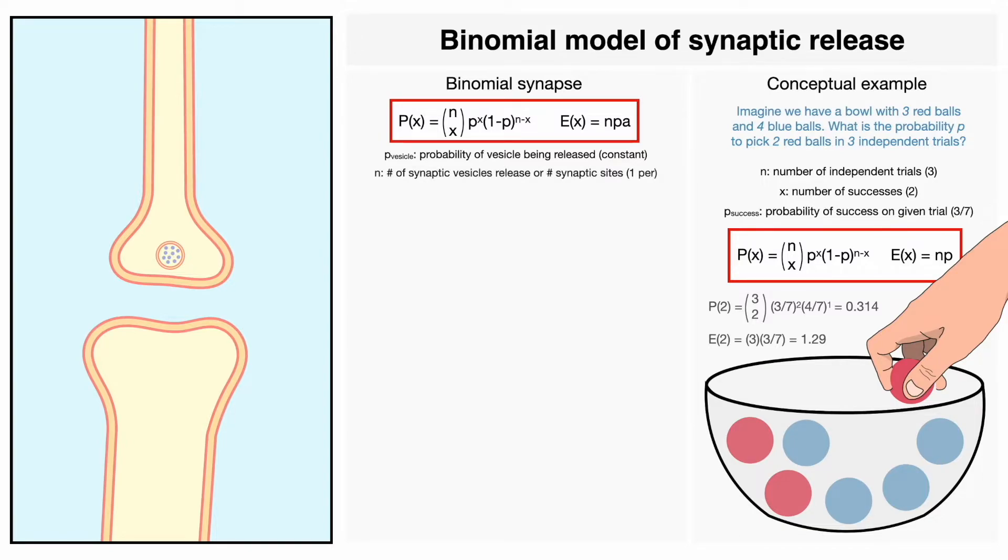Now, when it comes to n, instead of thinking in terms of trials, we can think in terms of quantas that are released. It turns out that in the central nervous system, it is not uncommon to impose the limit of quantas to the number of release sites. In our left diagram, n is currently equal to 1, but if an additional release site was to be added, then n can equal to 2,